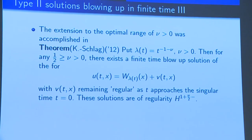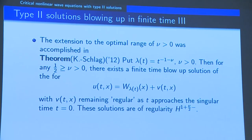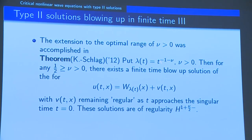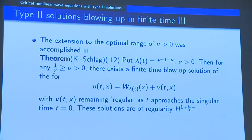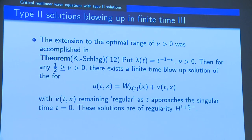Explicit examples for the full range of possible polynomial rates allowed by the Duyckaerts-Kenig-Merle classification were obtained by Schlag and myself in 2012.